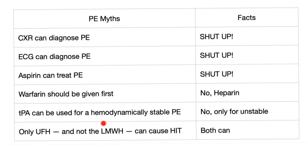Myth: TPA can be used for hemodynamically stable PE. No — TPA is only indicated when the patient has hemodynamic instability. Myth: only unfractionated heparin can cause HIT and low molecular weight heparin can never do this. Wrong — both of them can lead to HIT.